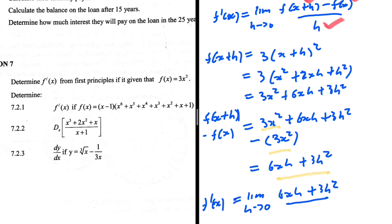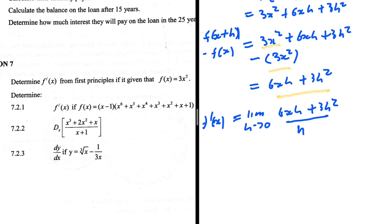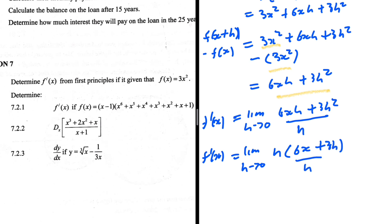We take h as a common factor in the numerator, giving h times (6x plus 3h), all divided by h. The h's cancel, then we let h tend to zero. Since 3 times 0 equals zero, f prime of x equals 6x.